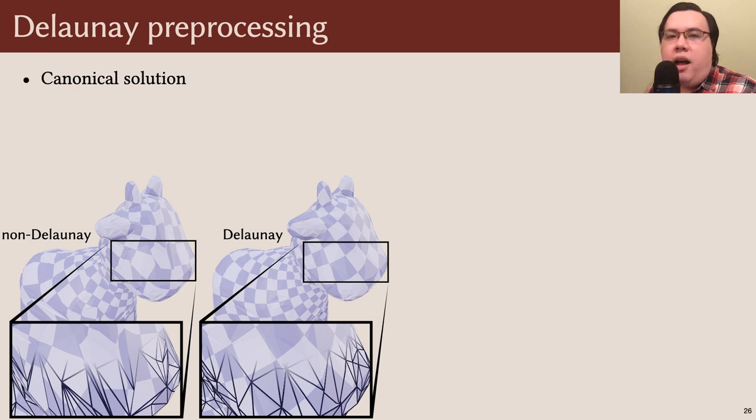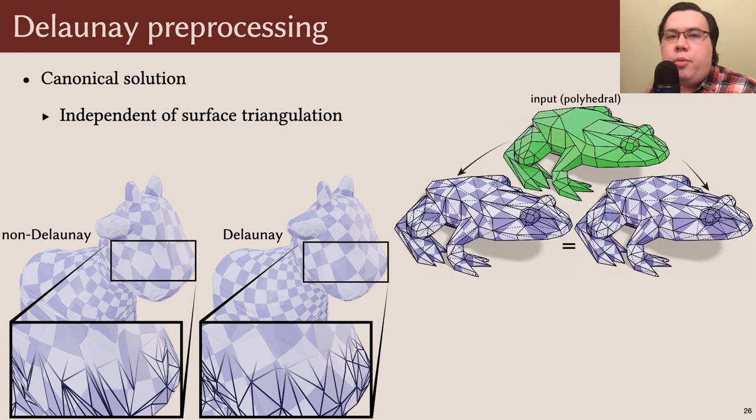One other beneficial consequence of this preprocessing step is that it makes our output canonical, independent of the particular triangulation used as input. For example, here's a polygonal mesh of a frog. No matter how we triangulate it to feed it into our algorithm, it always has the same intrinsic Delaunay triangulation, so we always obtain the same parameterization as output. Note, though, that now we have to keep track of three triangulations throughout: the input mesh, its intrinsic Delaunay triangulation, and the varying triangulation used during optimization.